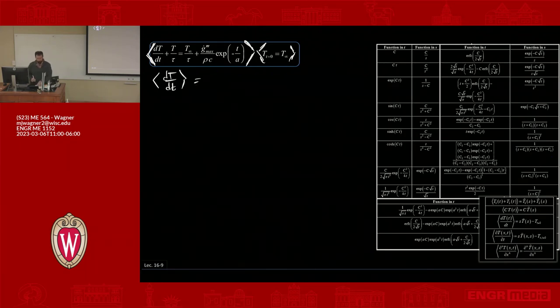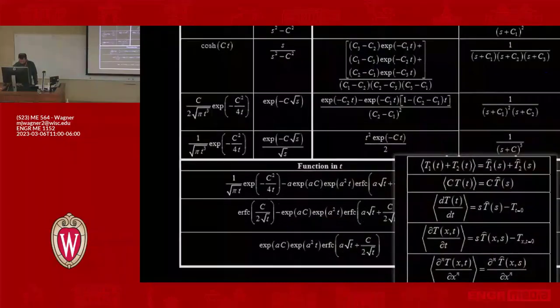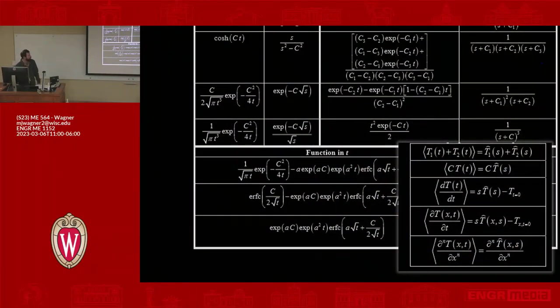For that one, I need to look over in the table. If you look in the bottom right hand corner, we have dT/dt right here. This is what we're trying to do. So we have to say this is the Laplace: it's s times some function—we don't know this, this is what we're solving for—T of s, minus my initial condition evaluated.